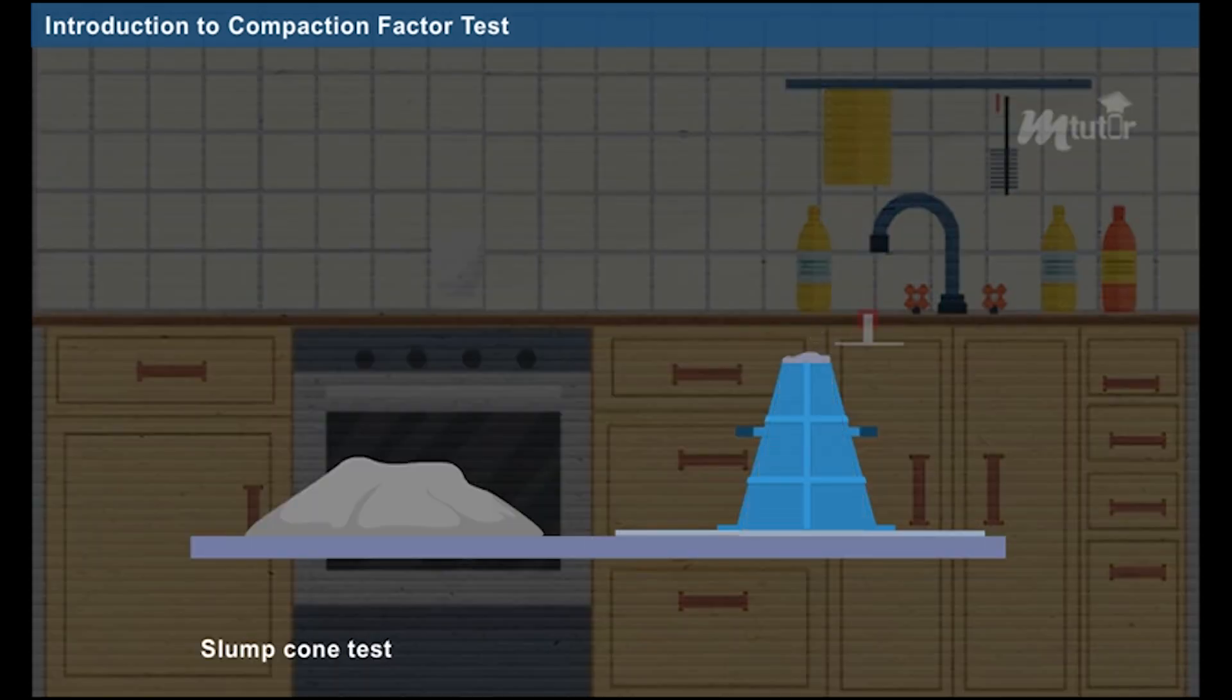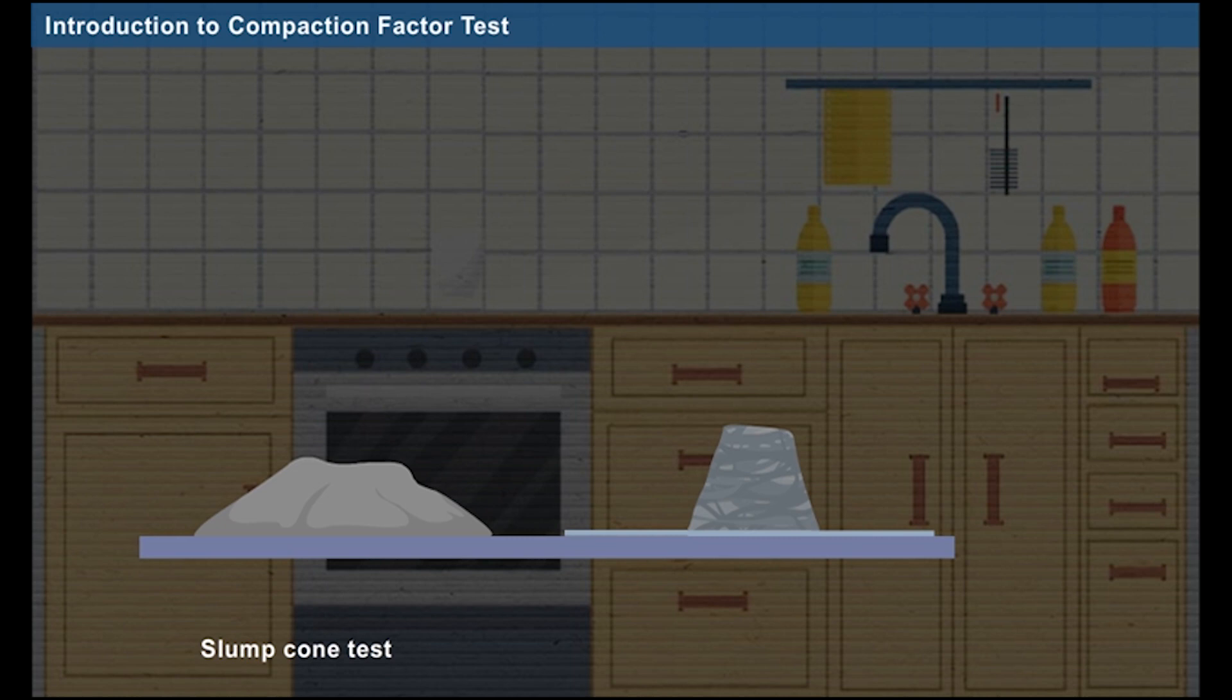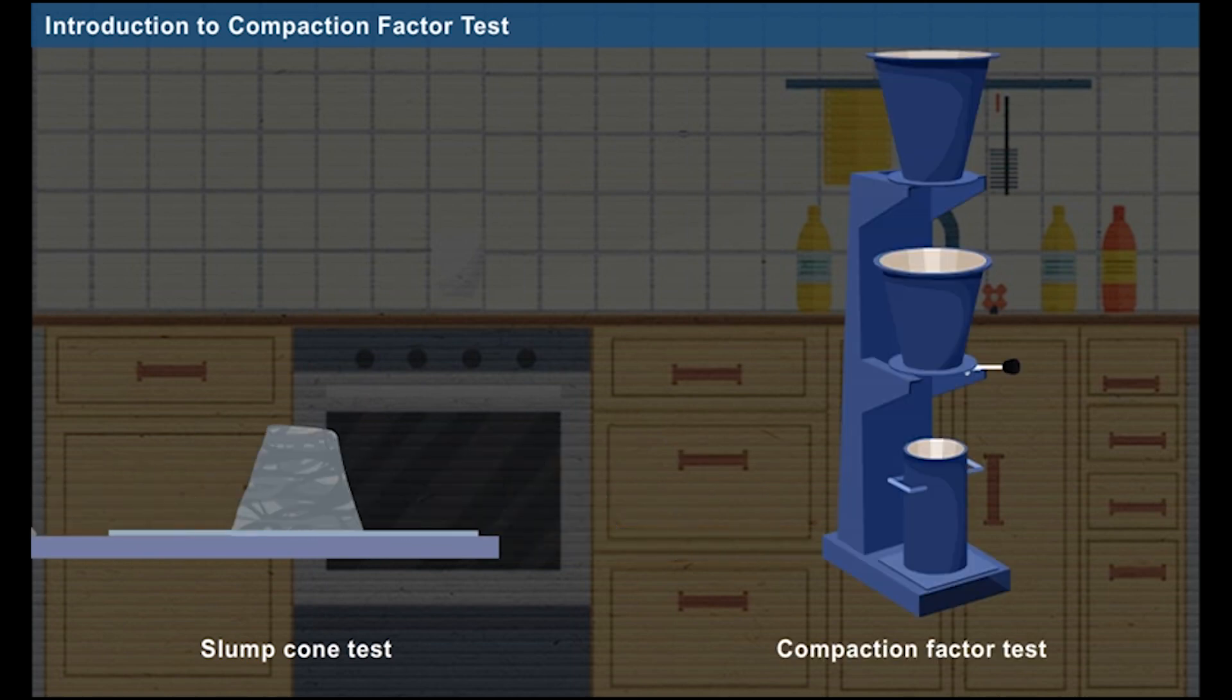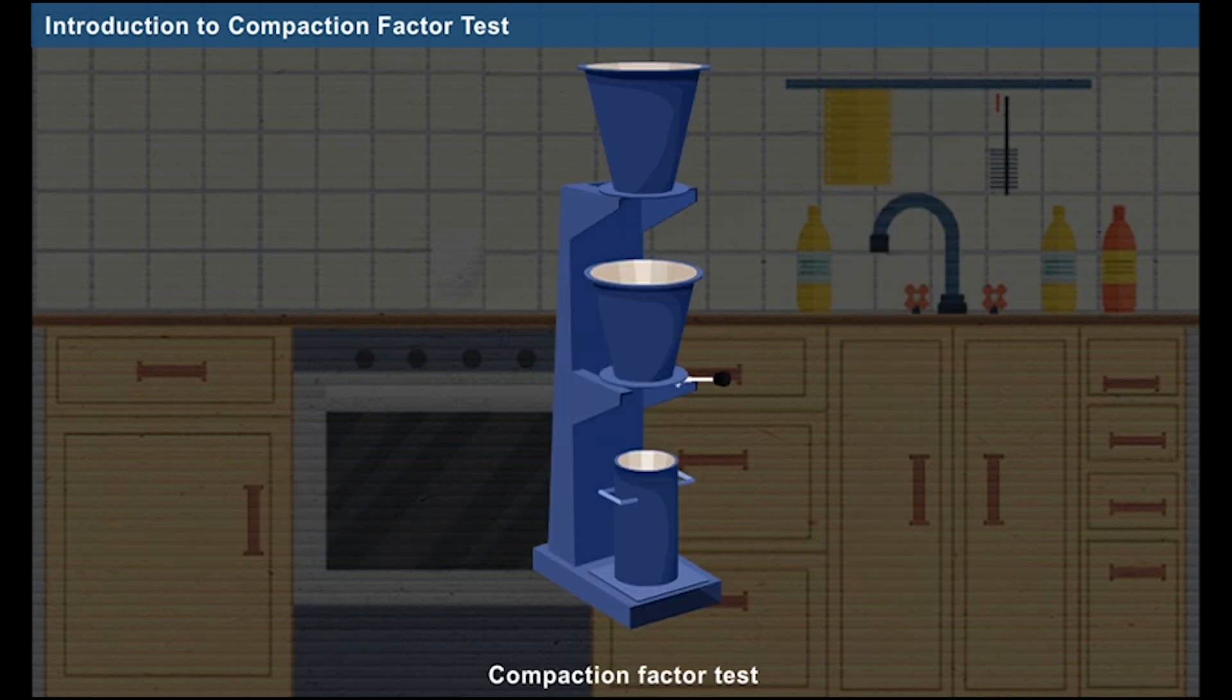Slump cone test is generally used for determining the workability of highly workable concrete. Whereas, compaction factor test is used for determining the workability of less workable concrete. Now, let us discuss about the compaction factor test in detail.